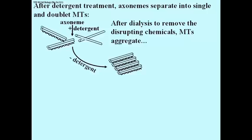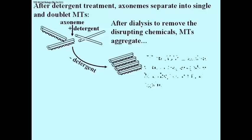The single microtubules don't have the capacity to associate with one another because they have nothing that allows them to bind. On the other hand, the doublets with their dynein arms — which would account for sliding of one doublet against another — would have to bind the doublets to one another at least at some point. So you can explain the production of this sheet by removing the detergent.